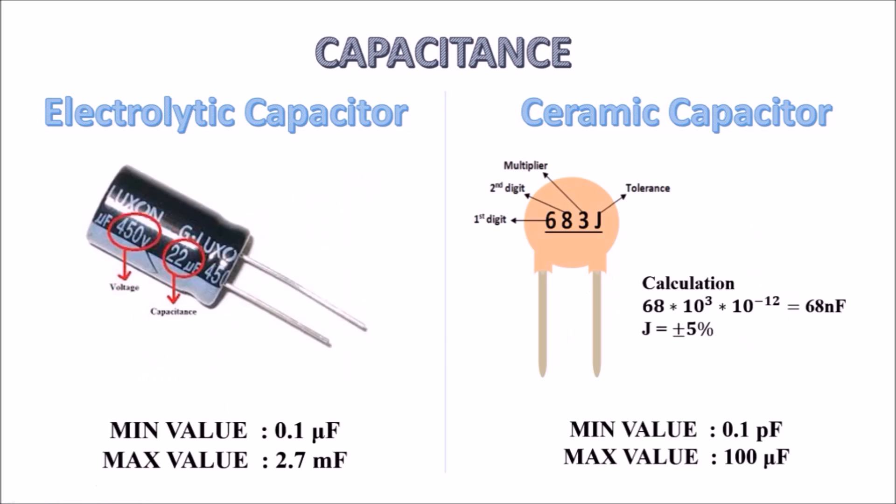Electrolytic capacitance approximately ranges from 0.1 microfarad to 2.7 millifarad, and the voltage and capacitance value is written on the capacitor. Ceramic capacitors approximately range from 0.1 picofarad to 100 microfarad. The code written on it has the first two digits multiplied by the multiplier, and the obtained value is in picofarad.